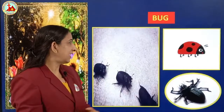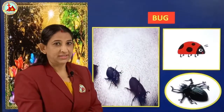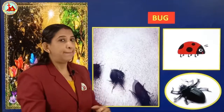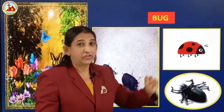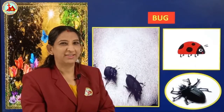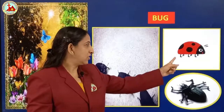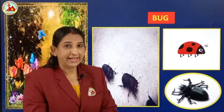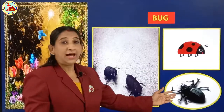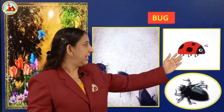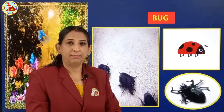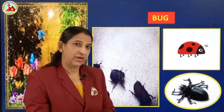Next is bug. This is a very tiny insect. This red color one is called ladybug — lady means girl, female. Male bugs are black in color, and ladybugs are red with black color dots above.